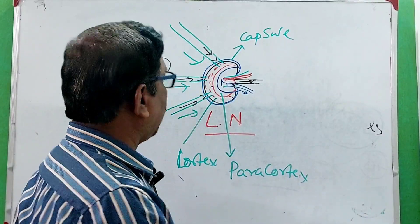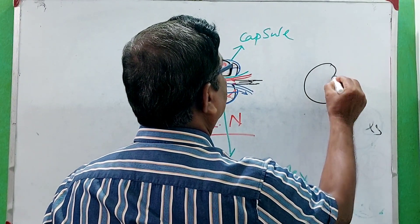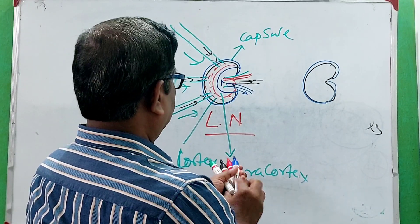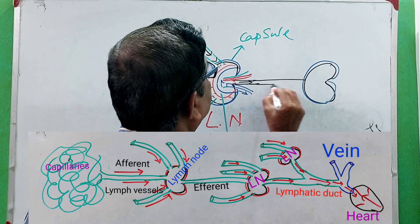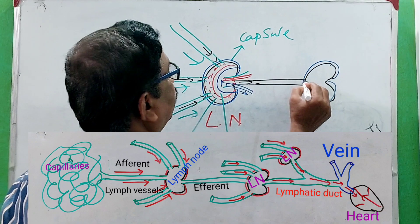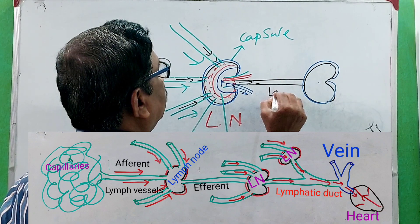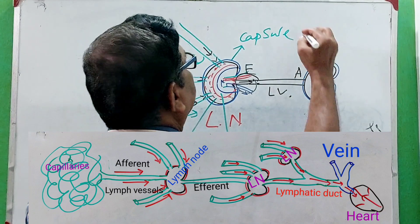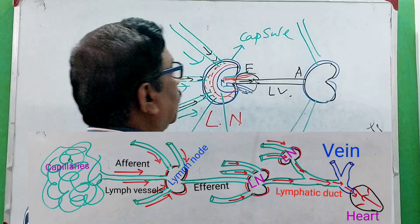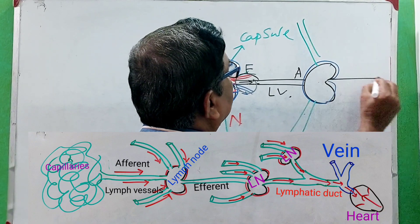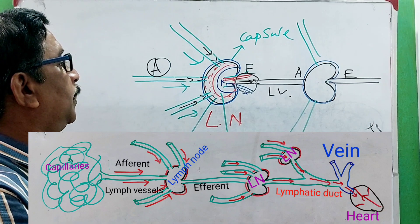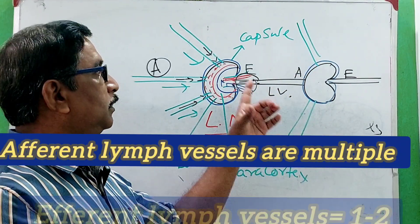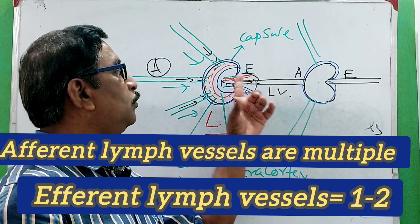If there is another lymph node on the pathway, the efferent vessel for the first lymph node becomes the afferent vessel for the second lymph node. The second lymph node also receives other afferent lymph vessels. For each lymph node there will be one efferent lymph vessel. From this we understand that every lymph node should have multiple afferent lymph vessels, but through the hilum will pass only one or maximum two efferent lymph vessels.